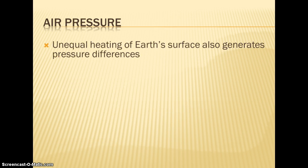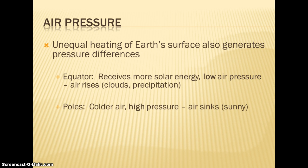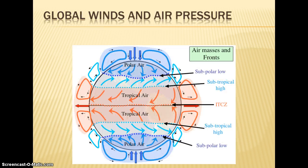Because of unequal heating of the Earth's surface, we see pressure differences. Where you have more solar energy, you have more evaporation, air that's rising, and low air pressure. When air rises, it takes any moisture with it, forming clouds and precipitation. At the poles, that warm air that's moved north and south starts to sink, creating higher pressure. Because the air is sinking, there's no moisture to rise, no clouds form, and you'll have sunny conditions. Air always moves from high to low pressure — this horizontal movement creates the winds we feel.